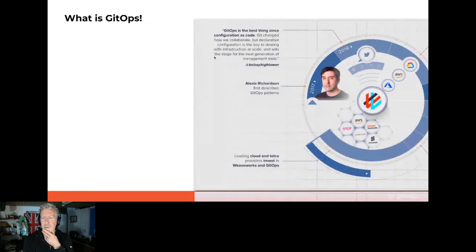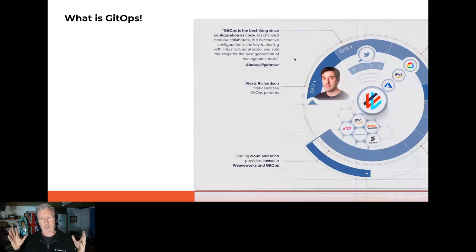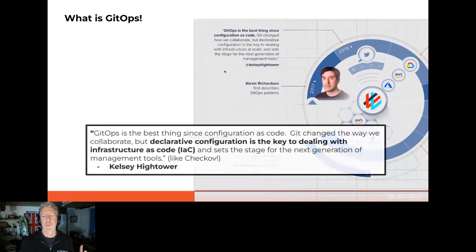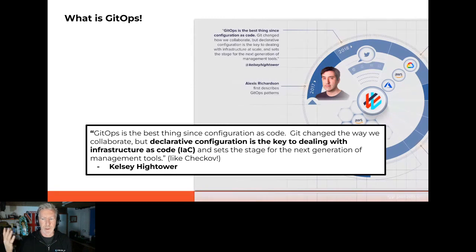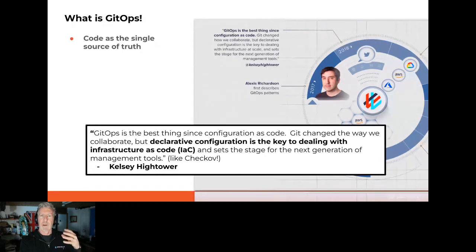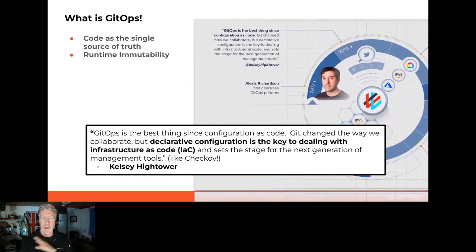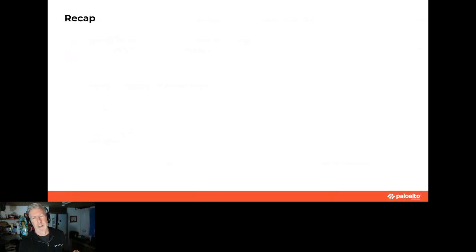GitOps — let me give you my take on it. It started in 2017 when Alexis Richardson, a CNCF-friendly figure, first started describing GitOps patterns and coined the phrase. Shortly afterwards, this legend of Kubernetes commented that GitOps is the best thing. More importantly, the key phrase: declarative configuration is key to dealing with infrastructure as code. In the combination of state as code and code being the single source of truth, we have the potential for runtime immutability — we never change runtime, we only ever change code.